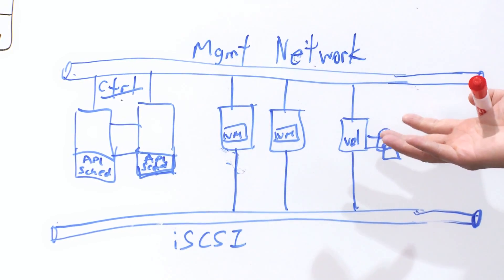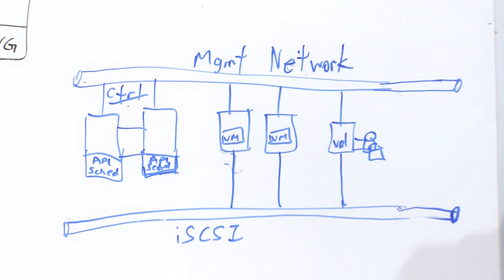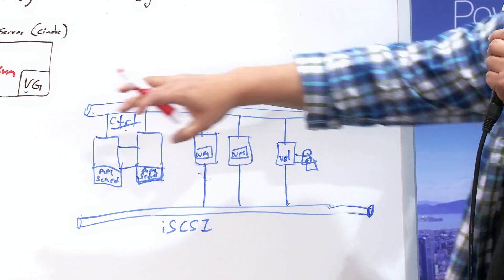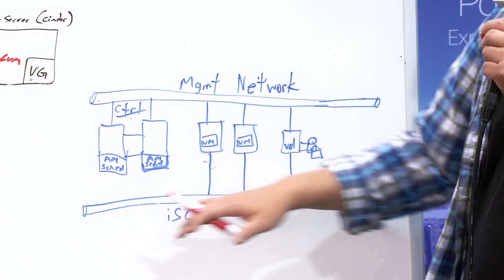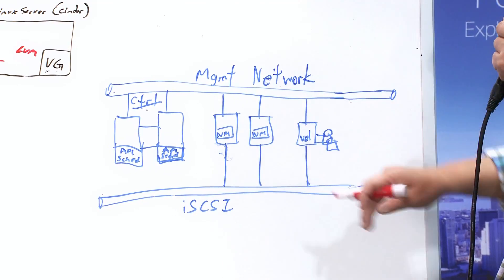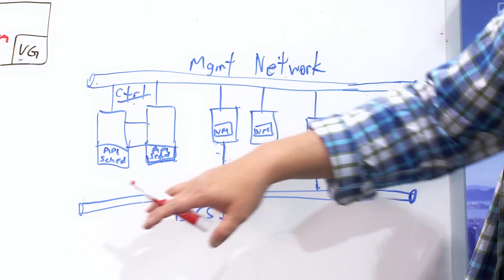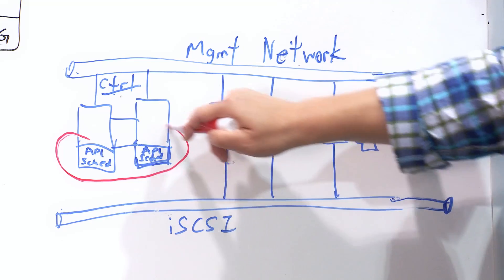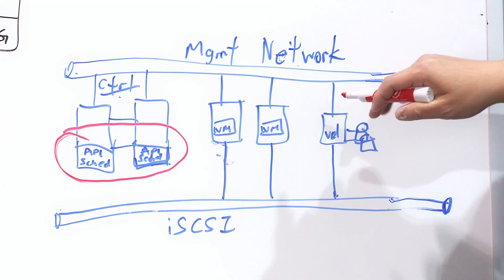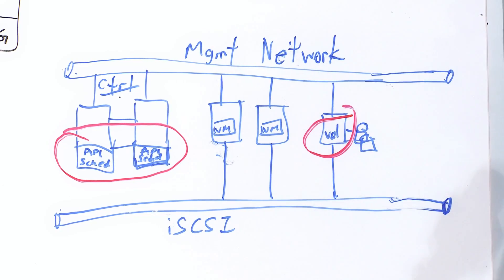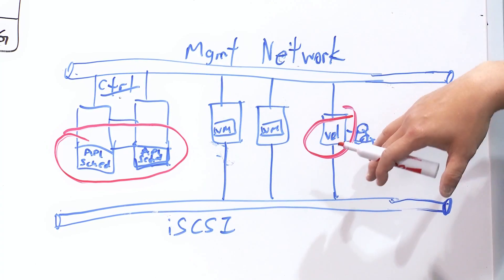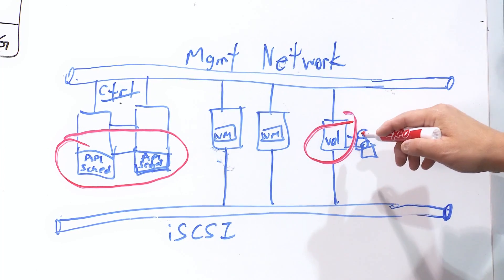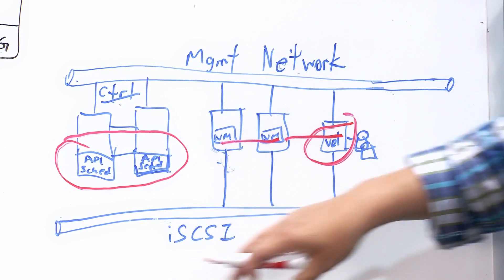You happen to have a spare server just hanging around, so it's very simple to get started. You take this server, attach it to your network — you basically need two networks: an IP network for management and an iSCSI network for storage traffic. You tie those together and install a couple of services. On the controller node you have a Cinder API service and a Cinder scheduling service, and on this spare server you put the volume service. That server has a bunch of storage behind it, and just by installing and activating these services you've now got a Cinder environment and can start assigning storage out to the VMs through the iSCSI network.